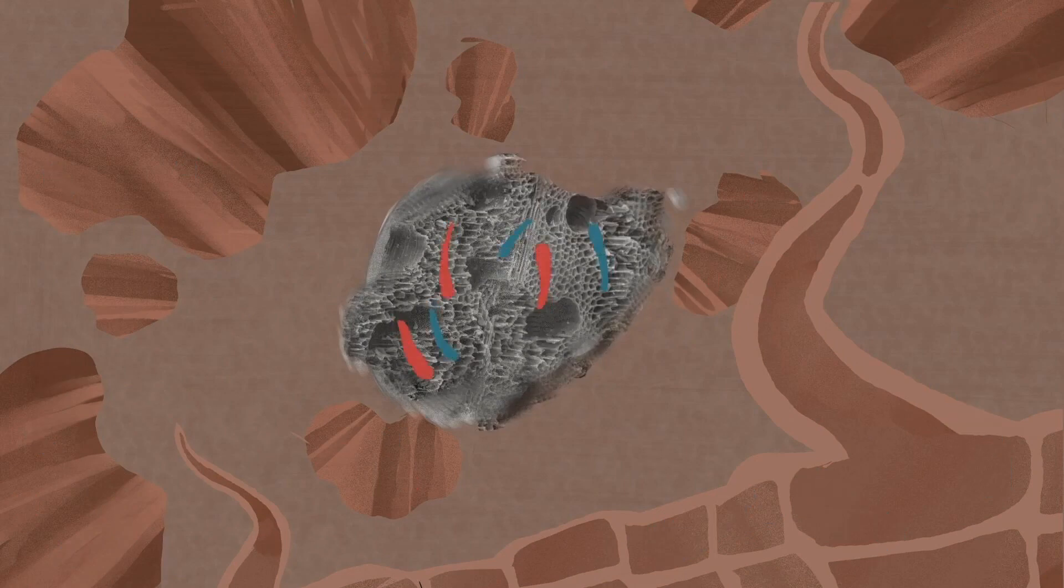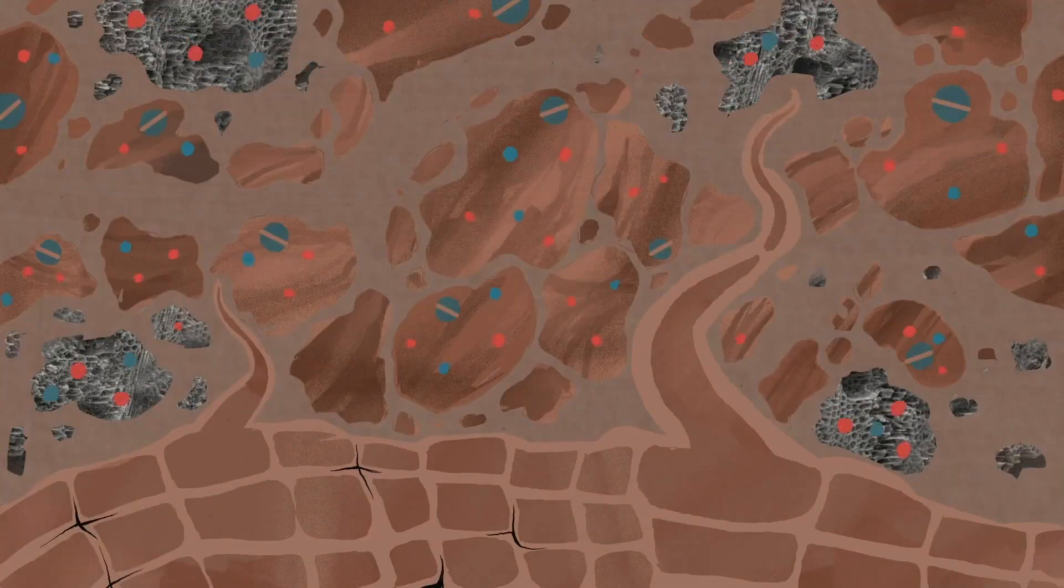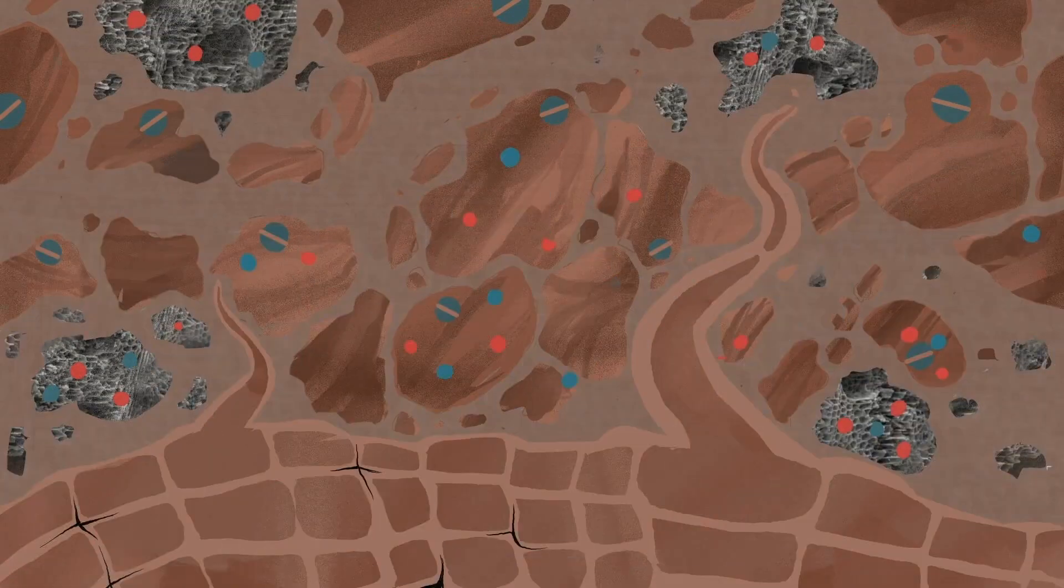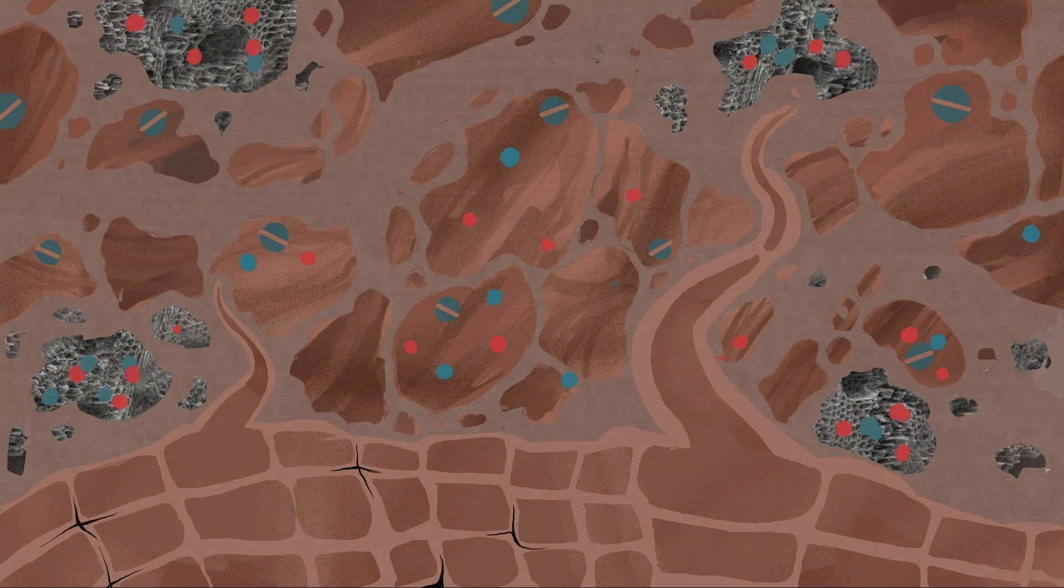Chemical. Biochar is very high in carbon, which is good for a process called cation exchange, which essentially means more nutrients are retained in the soil and available for plant roots.